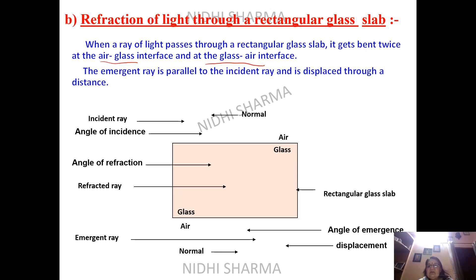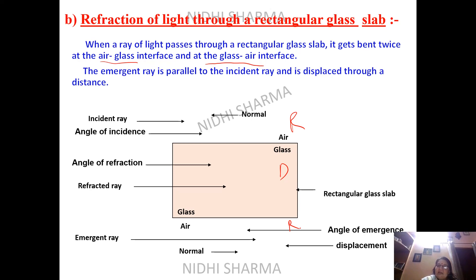The first refraction is from air to glass, and the second refraction is from glass to air. Air is the rarer medium and glass is the denser medium. When the ray enters from rarer to denser medium, it bends towards the normal. When it comes from denser to rarer medium, it bends away from the normal.